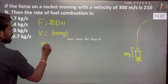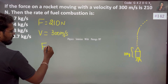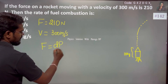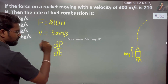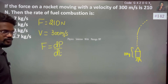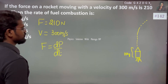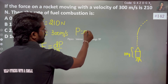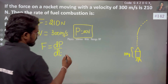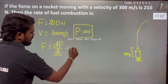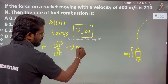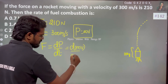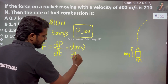So what we know is Newton's second law, which says force is equal to the rate of change of momentum. So this is nothing but p, which is momentum, which is mass into velocity. I can rewrite this as m·v, and I can say that as d(mv)/dt.